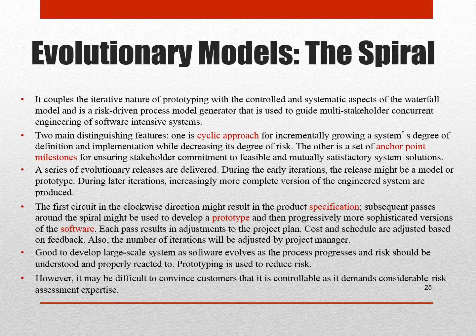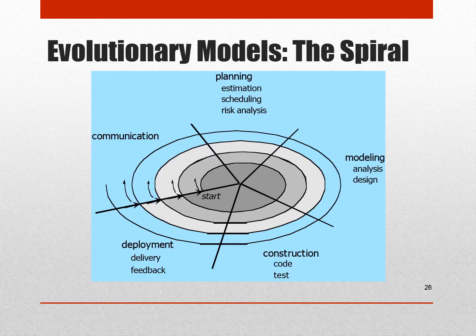The spiral model is good for developing large-scale systems as the software evolves as the process progresses, and risks should be understood and properly reacted to. Prototyping is used to reduce risk. However, it may be difficult to convince customers that it is controllable, as it demands considerable risk assessment expertise. The spiral model involves planning, modeling, construction, and deployment at different levels of iteration, and is quite successful in implementation in the IT industry.